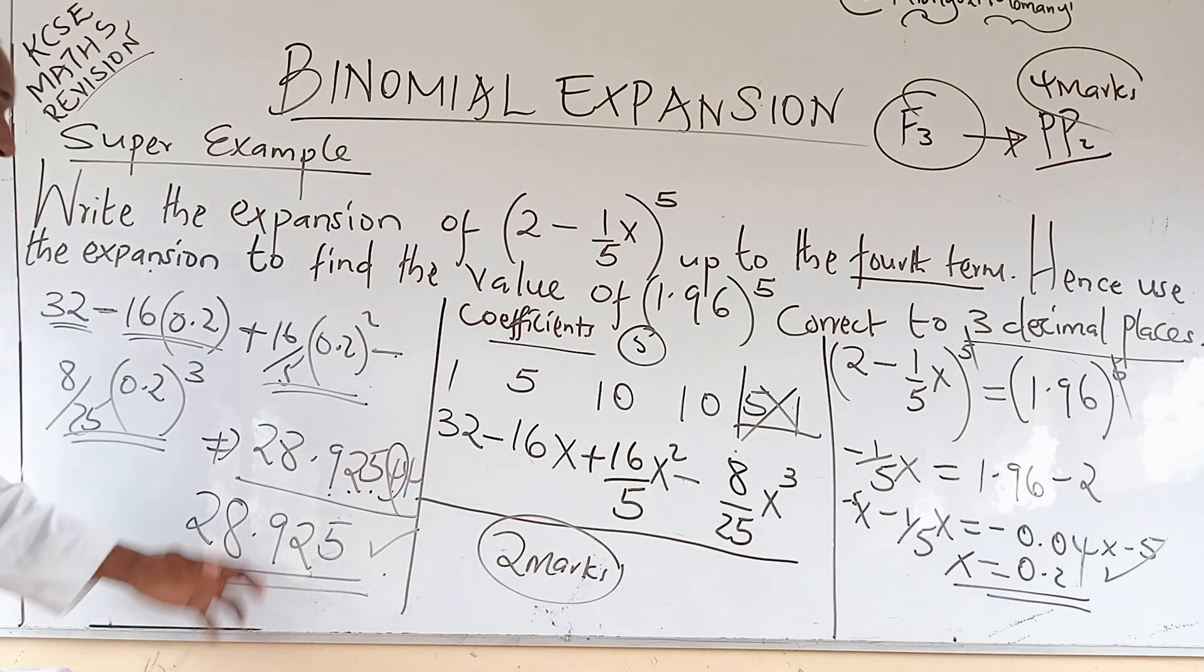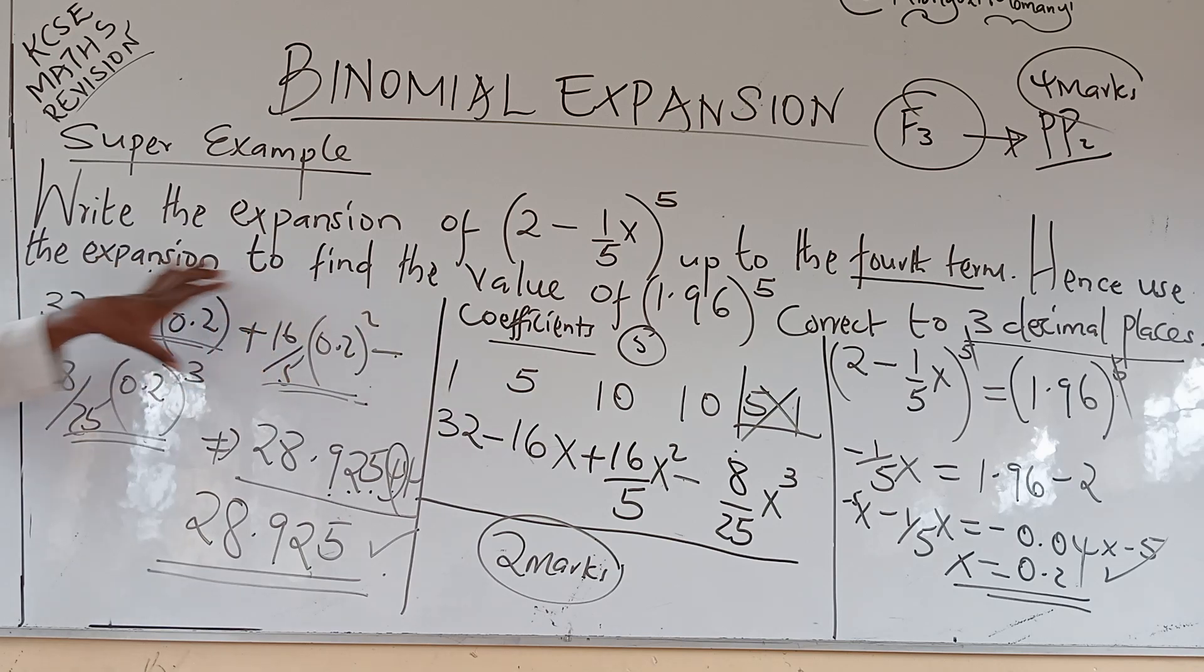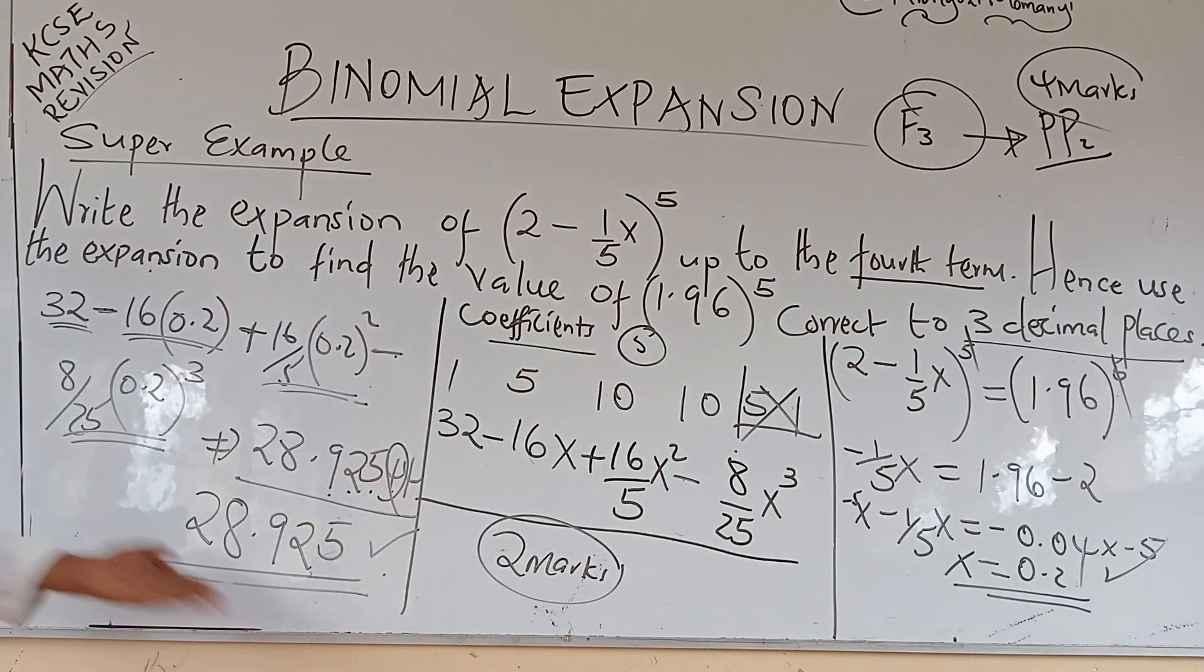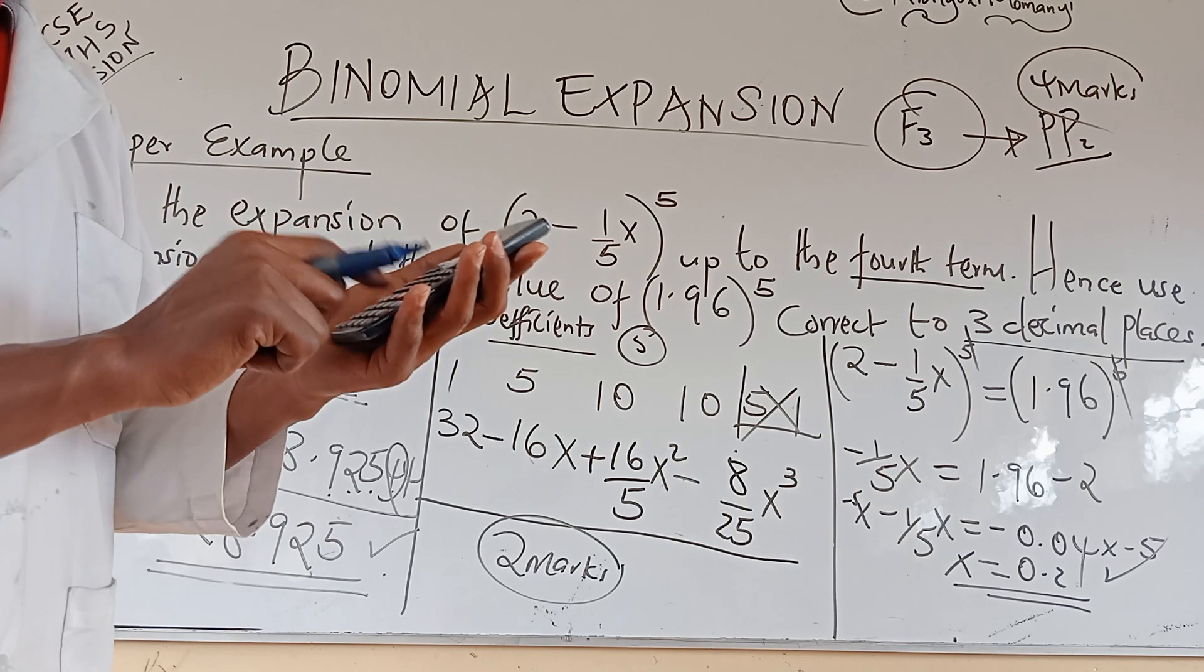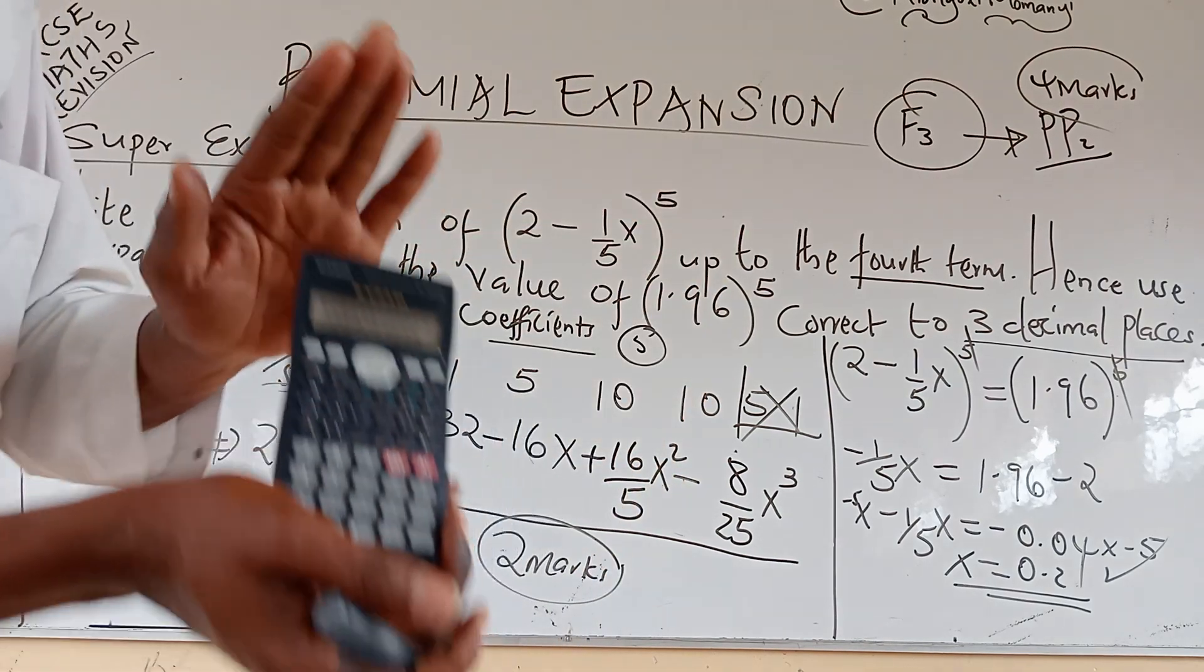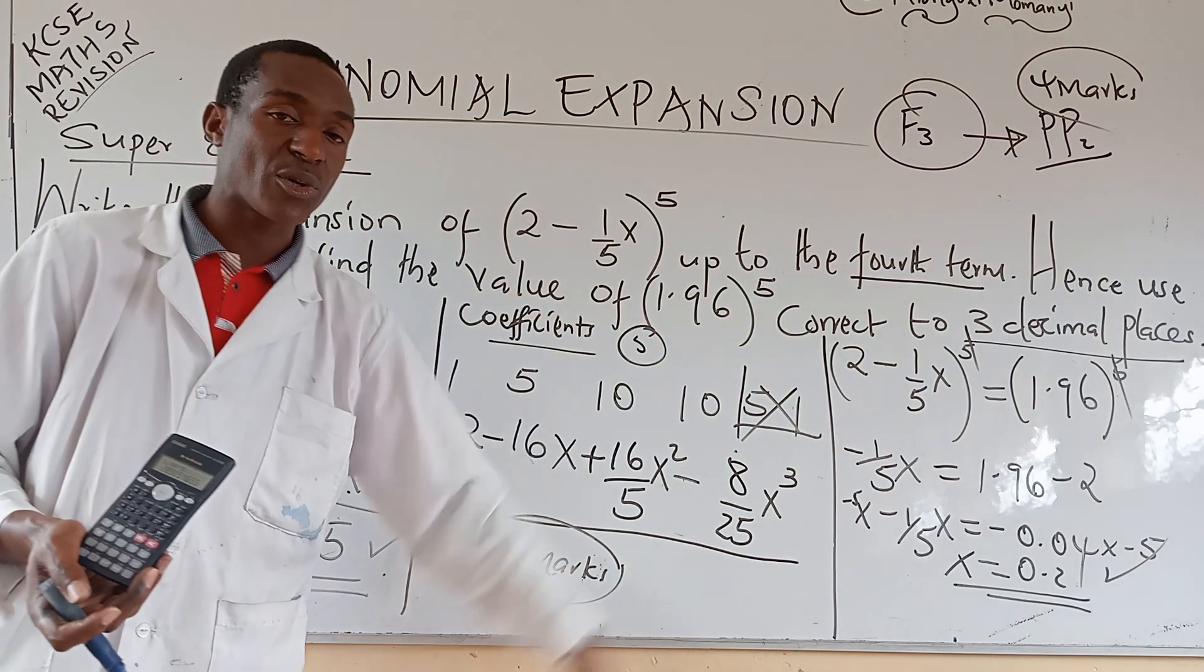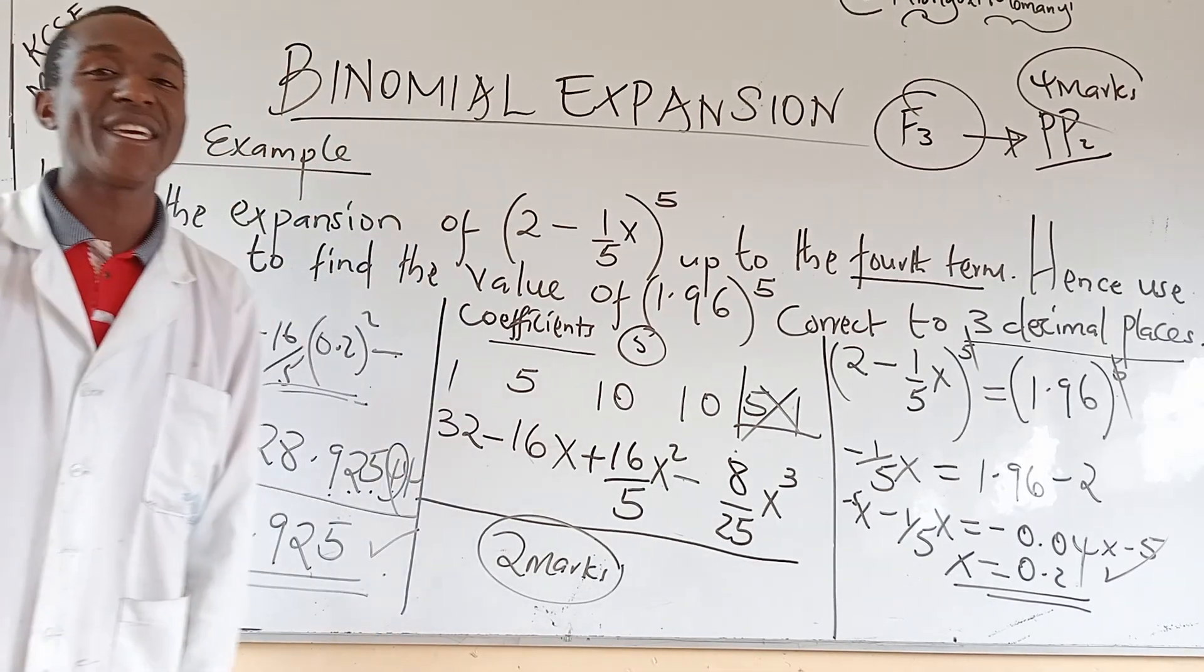What I will remind you is make sure you are more vigilant when you are doing the calculations. To confirm whether you've gotten that correct, you just need to key in 1.96 power five and see whether you get a value close to this. 1.96 raised to power five. This is what I get. Twenty-eight point nine two five and there is four, six. This one is equivalent to this one. This shows you were able to do the rest of the processes correctly. From this to the next lesson, I wish you all the best and thank you very much for following me.